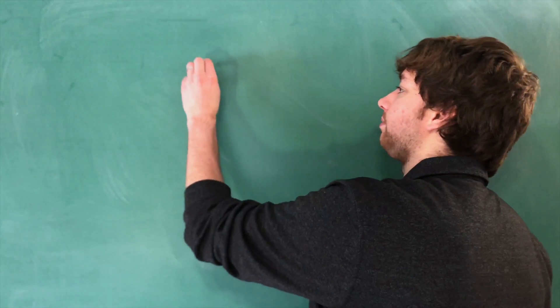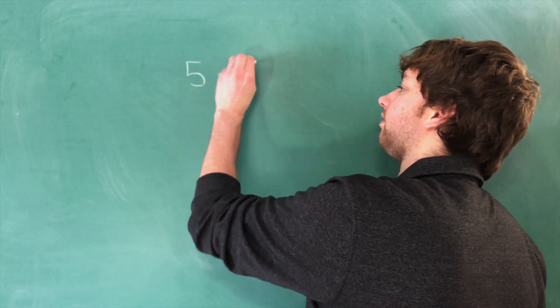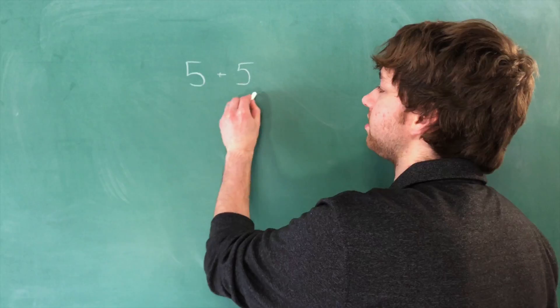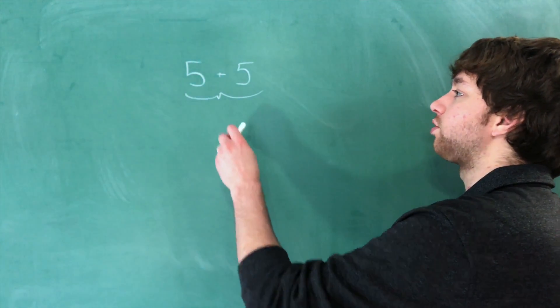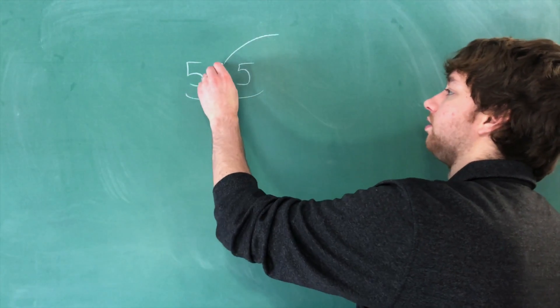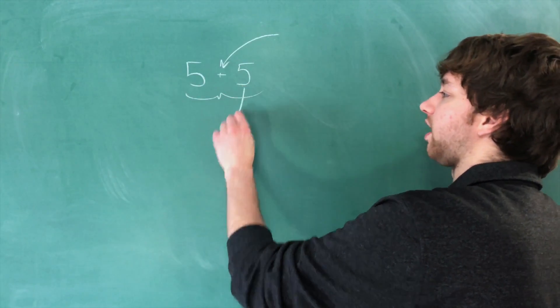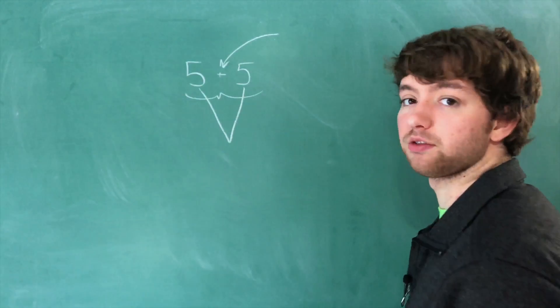First question is, if we have something like this: 5 plus 5, what is this entire thing called? So that's one question. Another question is, what is this called? And also, what are the 5's called? So there's kind of three questions here.